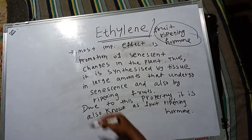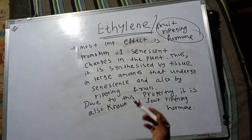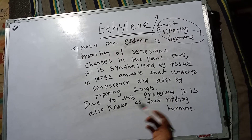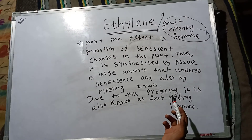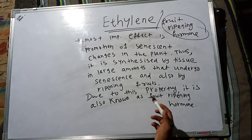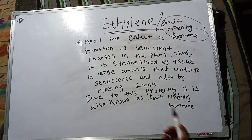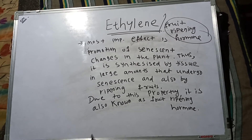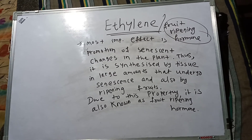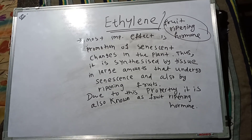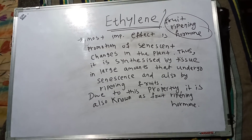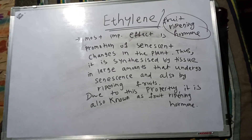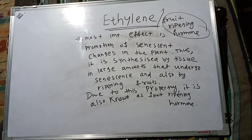So ethylene is otherwise known as fruit ripening hormone. This is all about ethylene or fruit ripening hormone. Thank you all.